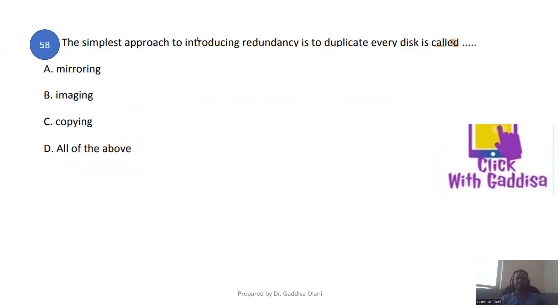The simplest approach to introducing redundancy is to duplicate every disk, which is called disk mirroring. Redundancy means that data is duplicated and stored on mirrored disks.